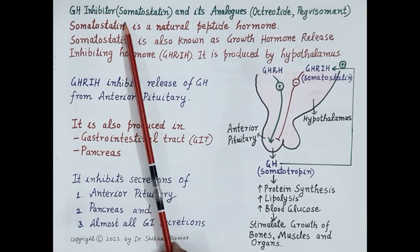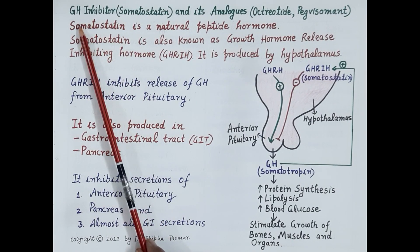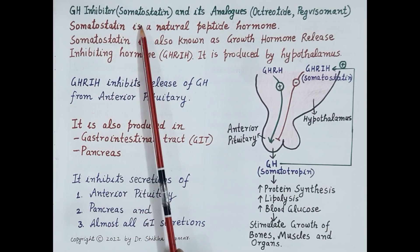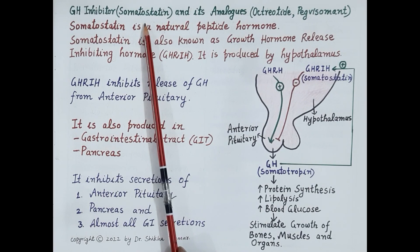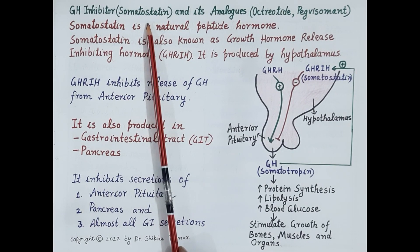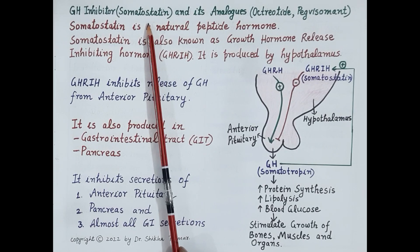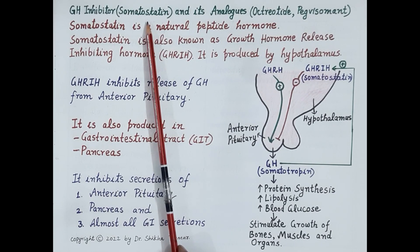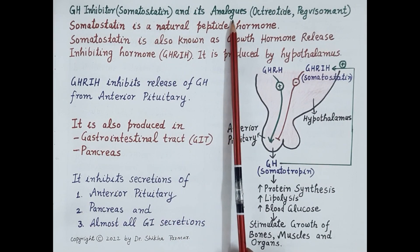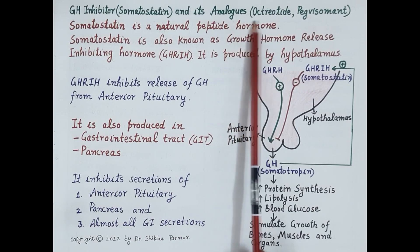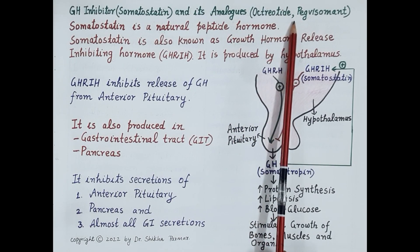Hello students. After studying physiology and functions of growth hormone, in today's video we are going to discuss physiology and uses of natural growth hormone inhibitor, that is somatostatin. Somatostatin is a natural peptide hormone and an inhibitory hormone that inhibits production and release of growth hormone. We will also discuss pharmacology of analogues of somatostatin like octreotide and pegvisomant.